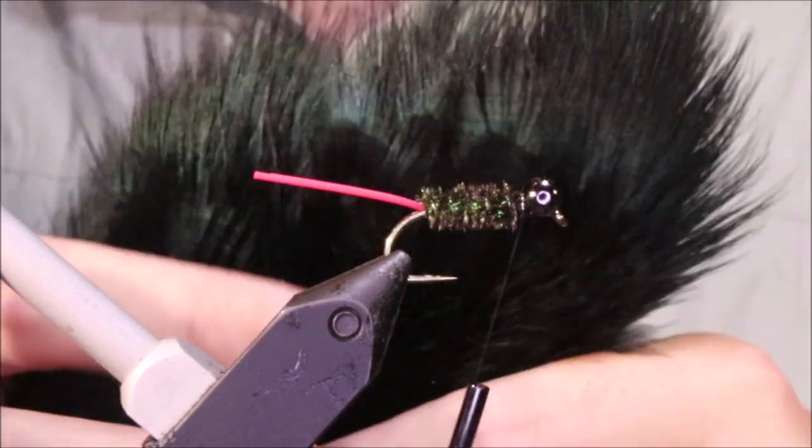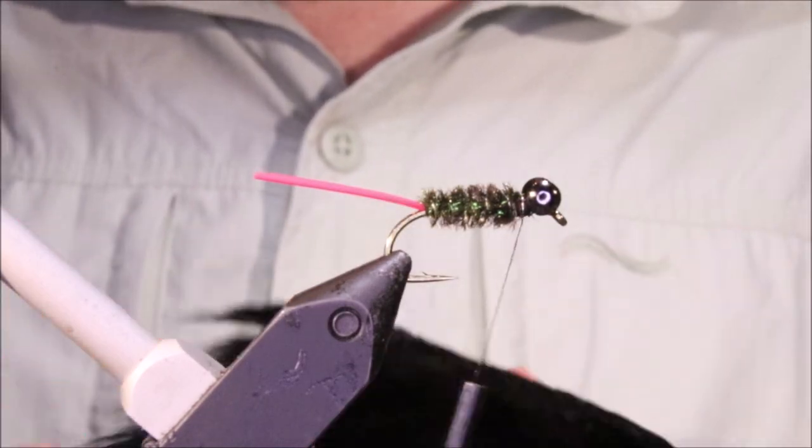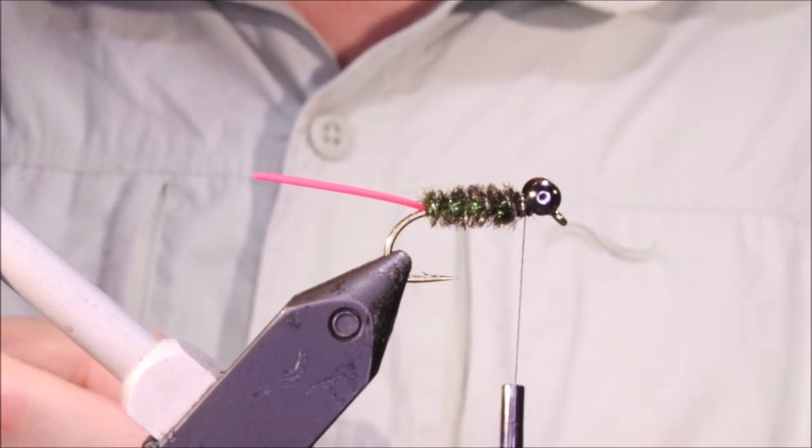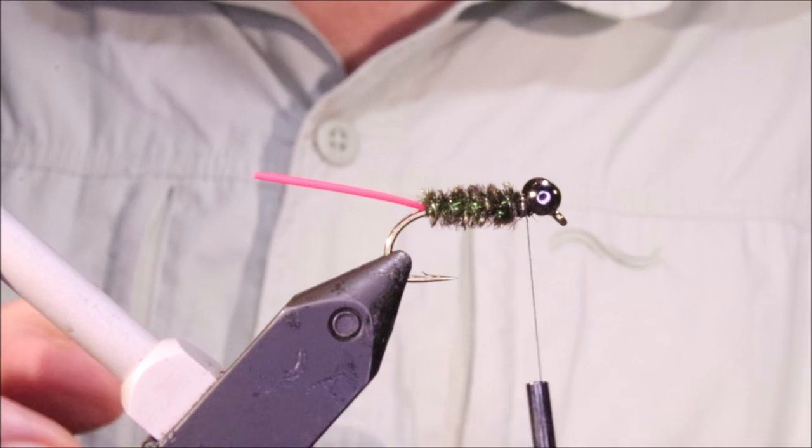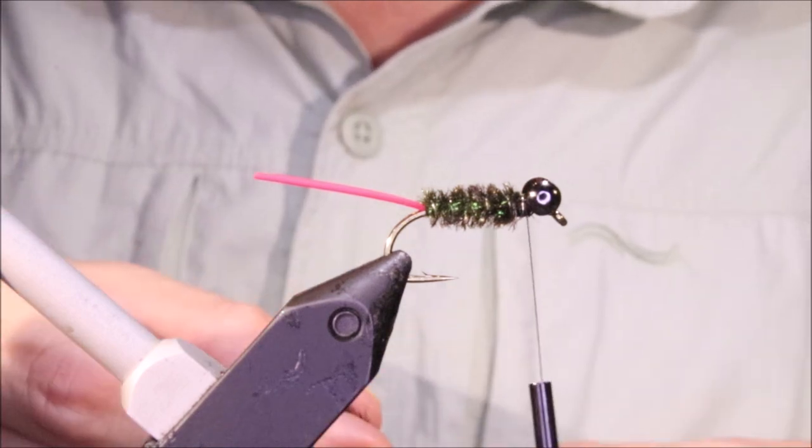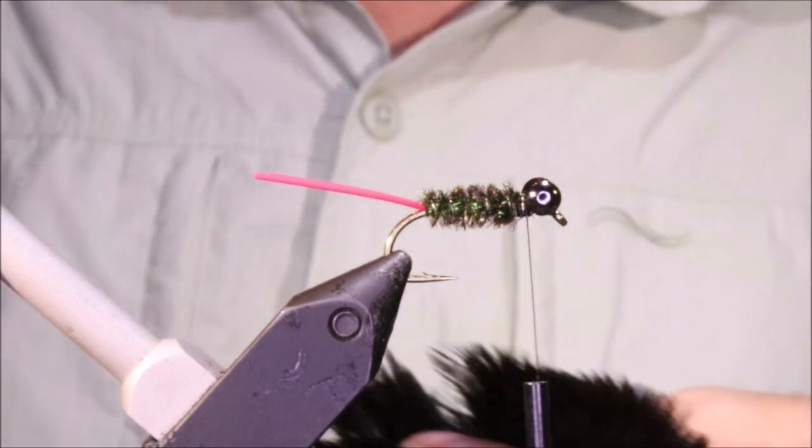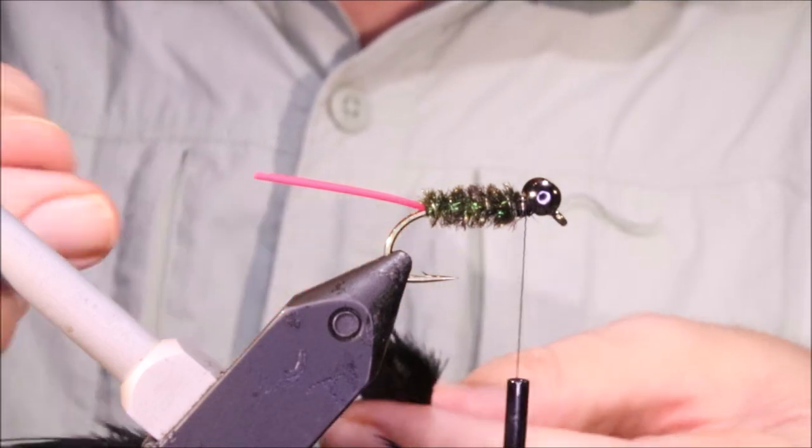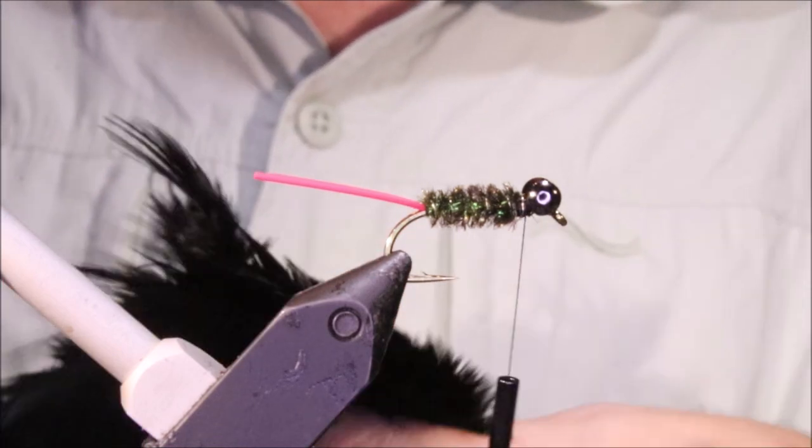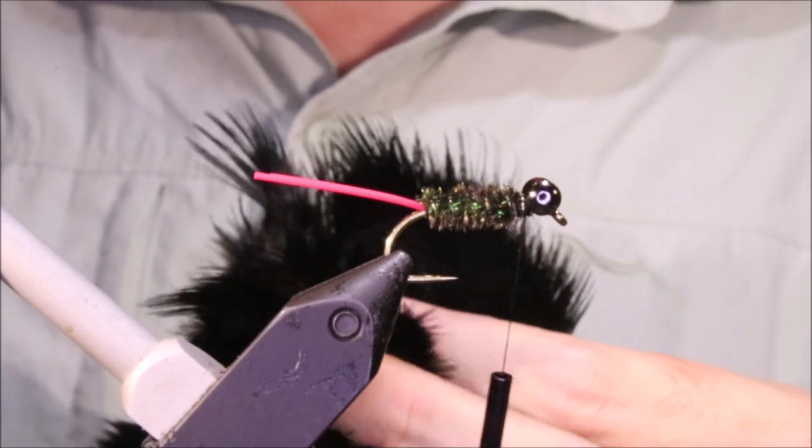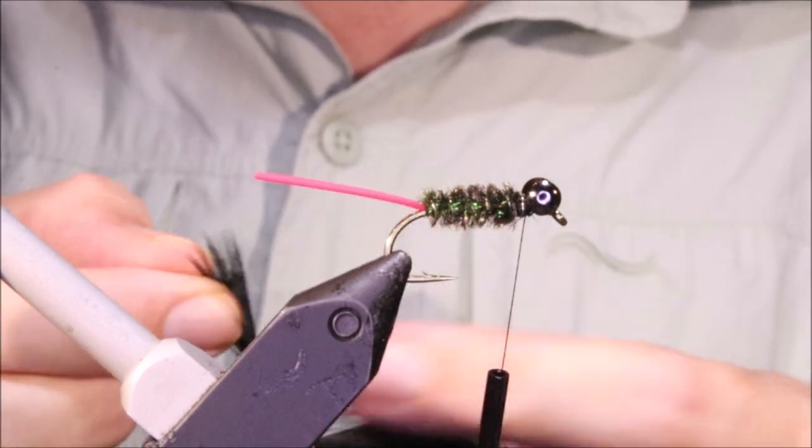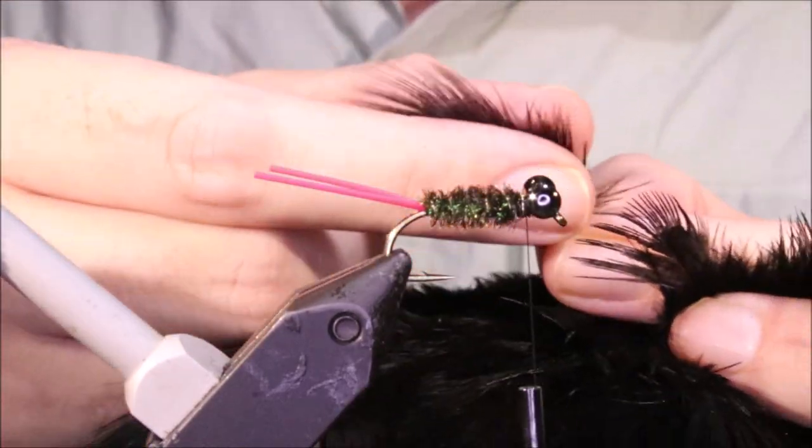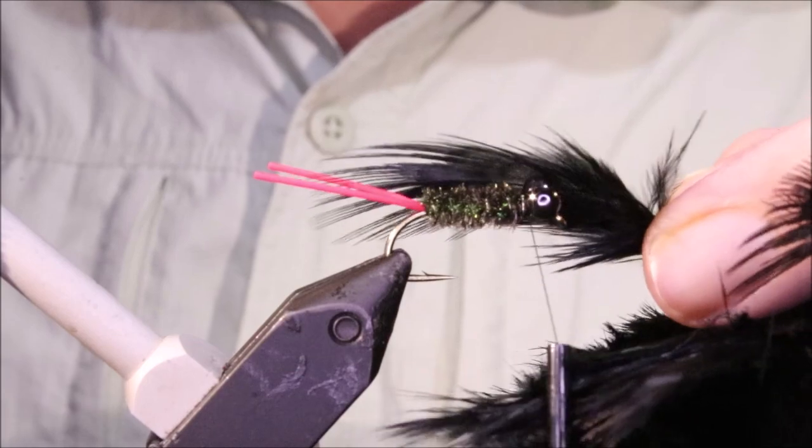I'm using the sort of standard which is pheasant ring neck, pheasant dyed black. But the natural's good, dyed red's really nice as well. You know just suit the colours to where you're fishing, the water clarity, that kind of thing. I really like this black colour on a bright sunny day in clear water. The carp just seem to like to pick it out.